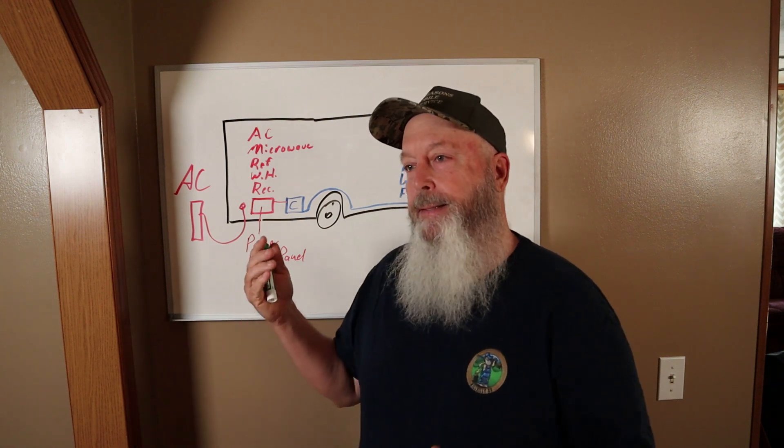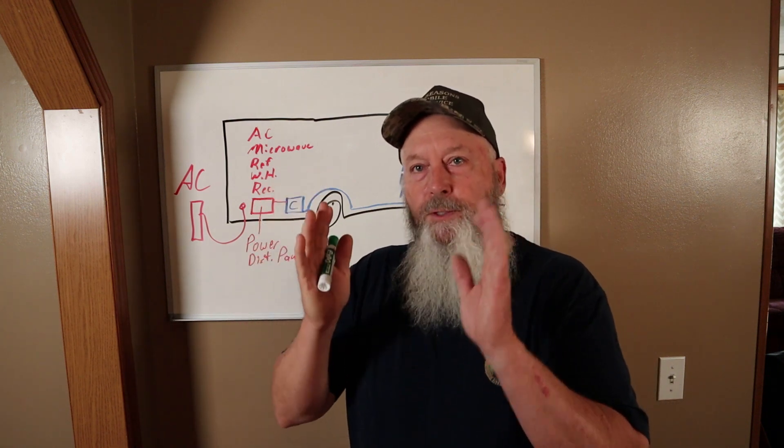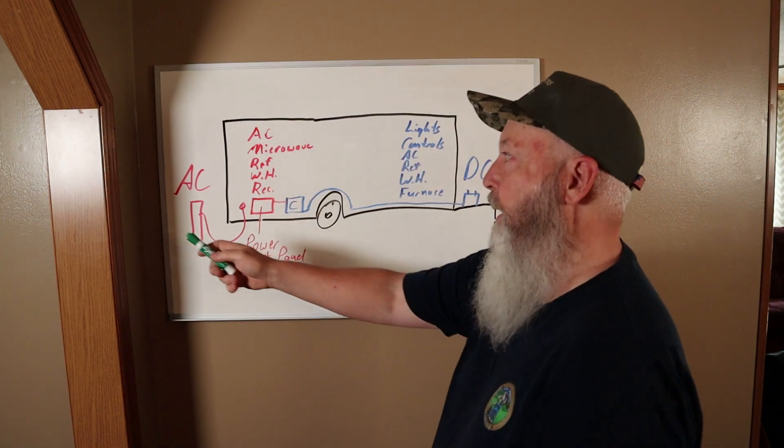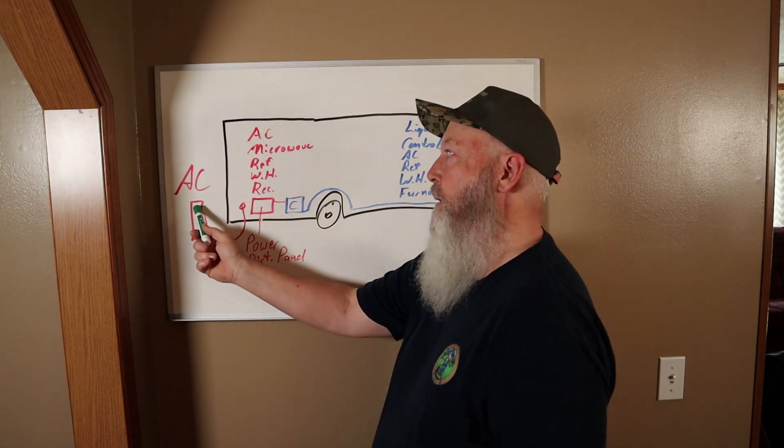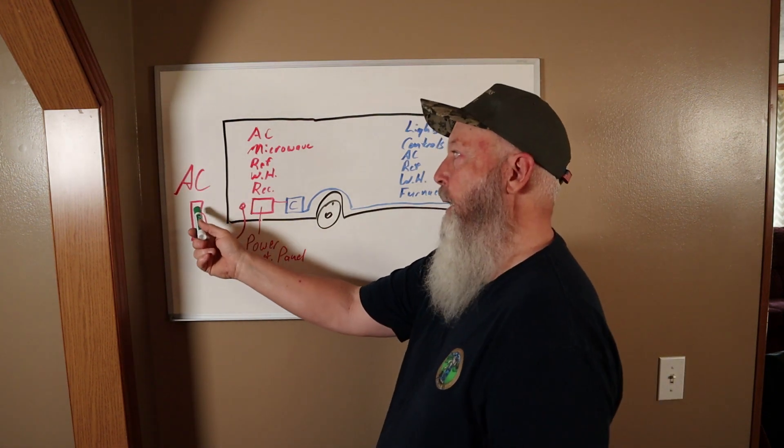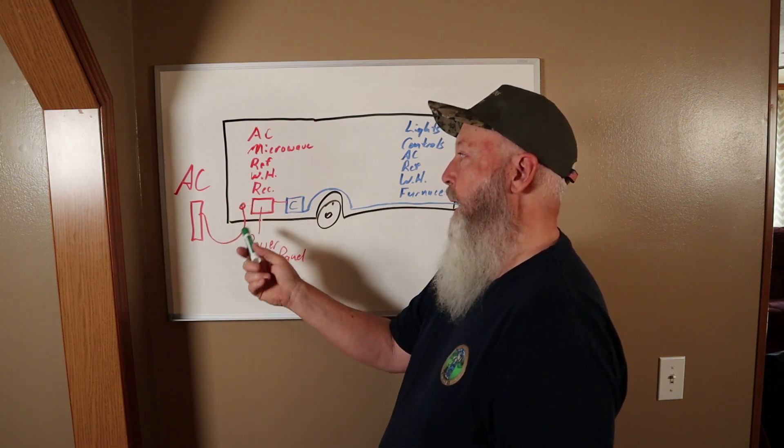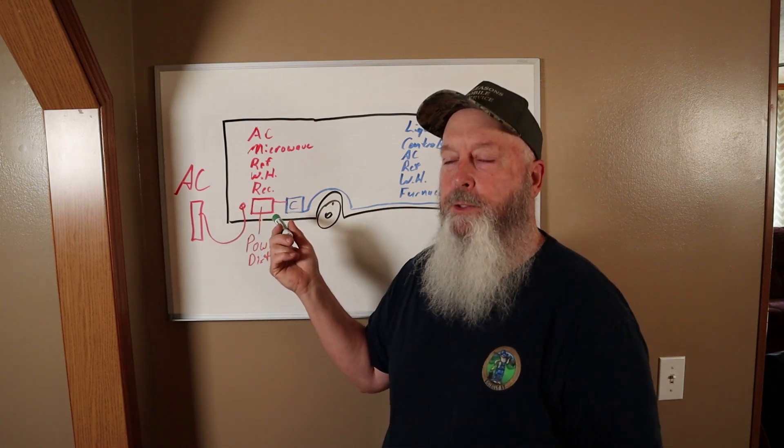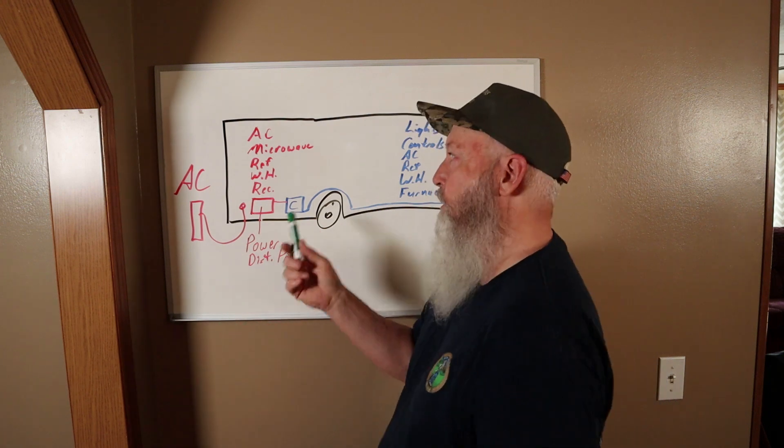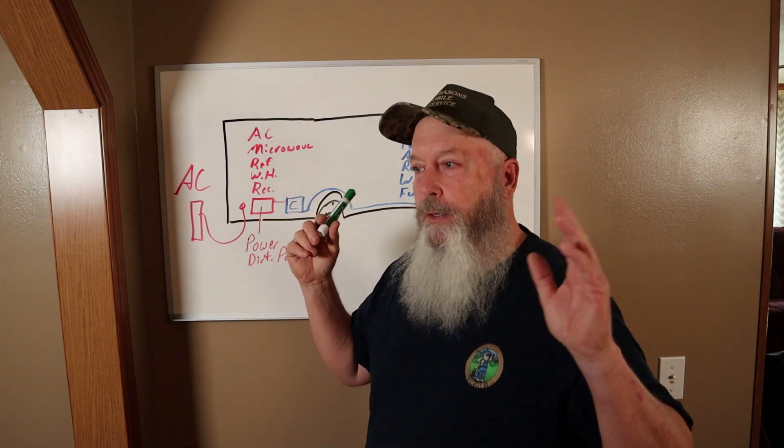Your AC power comes in from your pedestal or wherever you have your camper plugged in with the shore cord. It comes into your camper and goes to your power distribution panel. Now like I said this is super basic, this is just a little travel trailer.